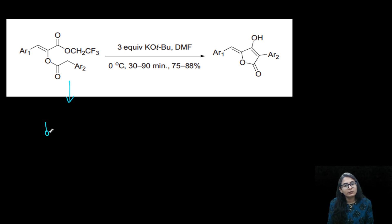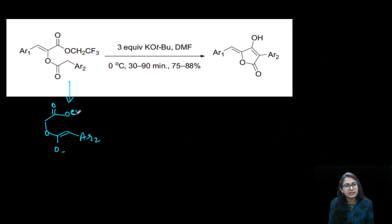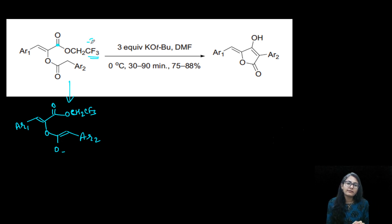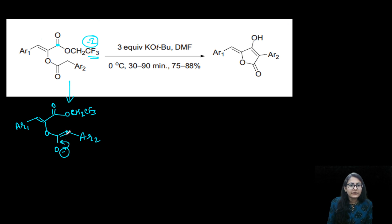Now if this is enolizable, you are going to write the molecule like this — this is Ar2, let's say there is some other ring. So this is CH2CF3. See, there is one very minor detail — there is CH2CF3. The CF3 group is there to make sure that the carbonyl carbon is very electrophilic, because of the minus-I effect these groups make the carbonyl carbon also very electropositive. So the enolate is being generated through this carbon, the attack is done like this, and the whole group removes.